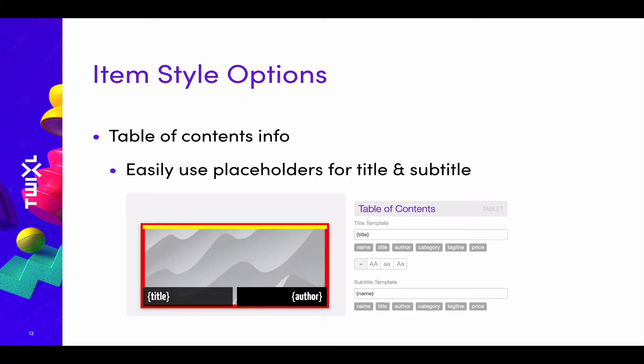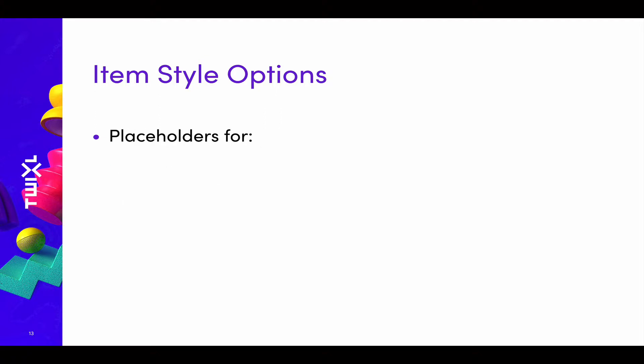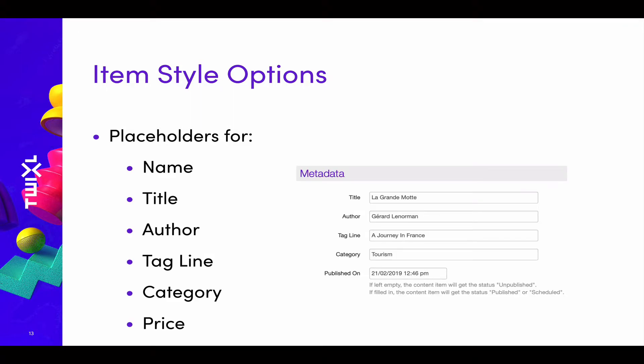The second option is table of contents info, which allows you to easily use placeholders for the title and subtitle. Different placeholders are available: you can use the name of the content item, or other metadata like title, author, a tagline, a category, and now also the price. If you're working with in-app purchases, it will display the price found in the App Store or Google Play Store. While metadata can be added manually when adding items to the grid, in most cases you will push content from an external solution and use the API to populate the metadata fields.